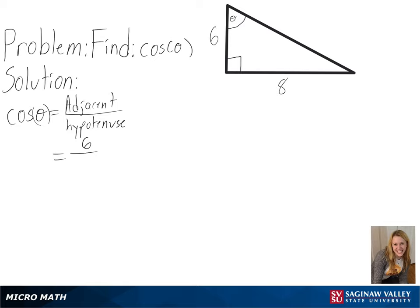but we can use the Pythagorean theorem, or a squared plus b squared equals c squared, to solve for our hypotenuse. Plugging in 6 for a and 8 for b, we will get the square root of 100 for c, or 10 as the length of the hypotenuse.